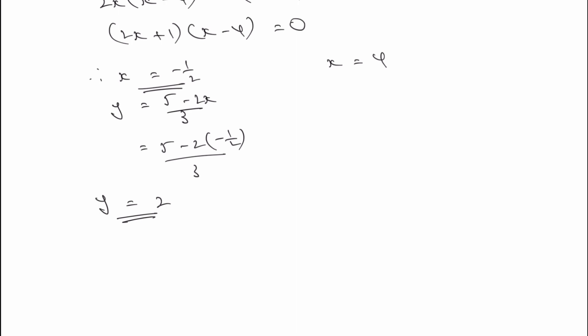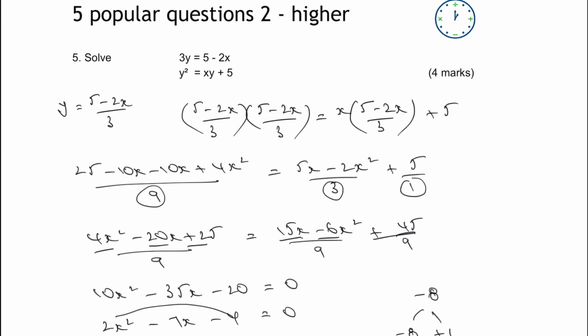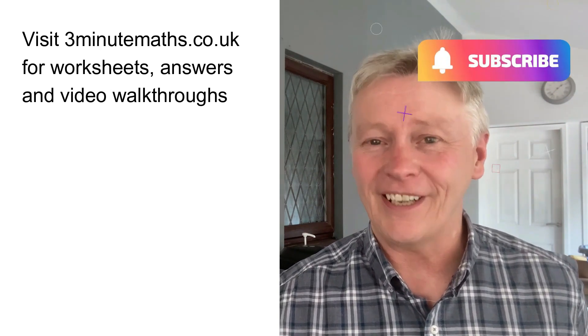For x equals four: y equals five minus two times four, all divided by three, which gives y equals negative one. So the second solution is x equals four, y equals negative one. And that is the answer to this particular question — it is a lot of work, but I hope it's been useful. Please let me know in the comments if you're unsure; there's another worksheet and walkthrough videos on these types of questions. Do subscribe to the channel and I'll look forward to seeing you in the next video.